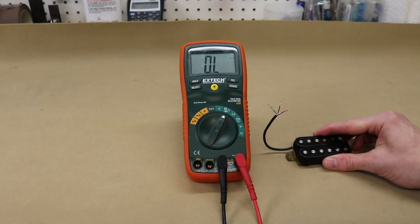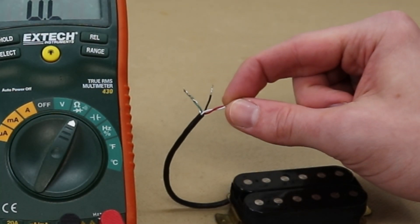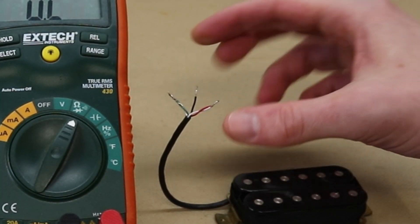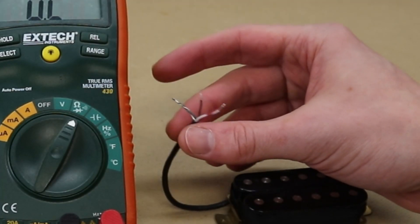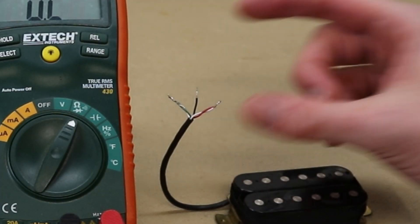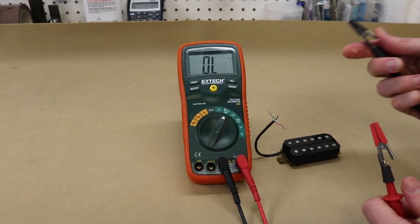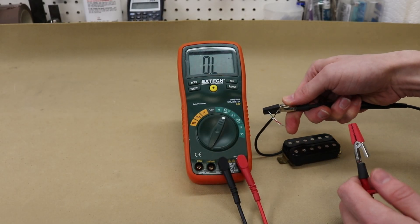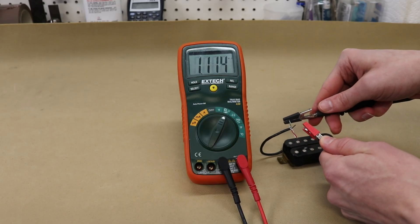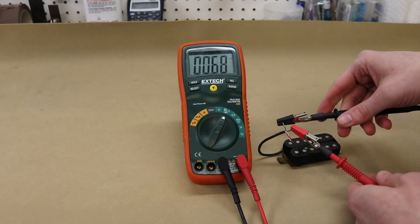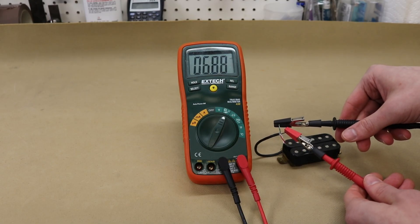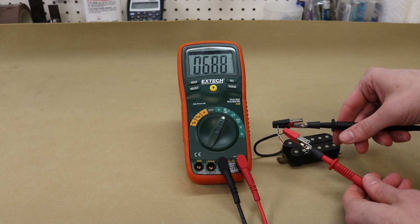So what you do here is you twist the red and white wires together, you twist the bare and the green wires together, and then your black wire is hot. So for this pickup I'm going to take the black probe and connect it to green and bare, and the red probe I'm going to connect to the black wire, and this gives me a DC resistance of about 6.9k.